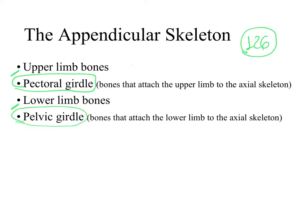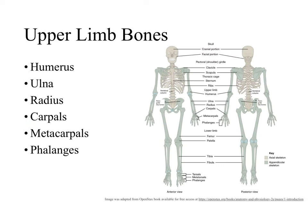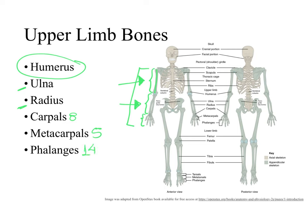We will start studying the upper limb bones now. The upper limb is divided into three main regions: the arm, the forearm, and the hand. In anatomy class, when we say arm, we are referring to the anatomical arm — specifically that region. The arm has only one bone, called the humerus. The forearm has two bones, named ulna and radius. The hand has eight carpal bones, five metacarpal bones, and 14 phalanges.